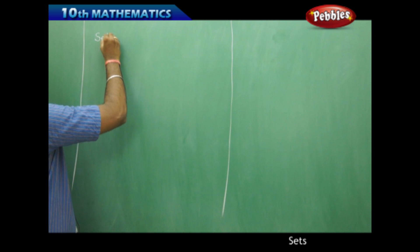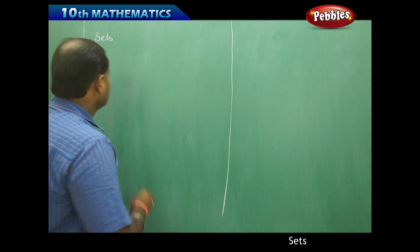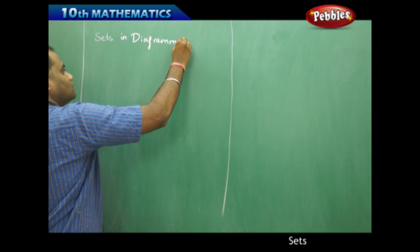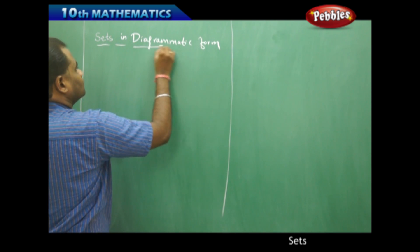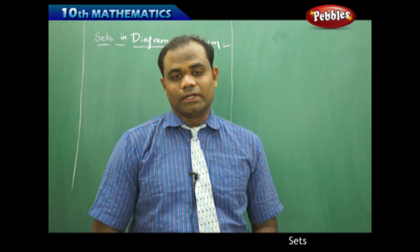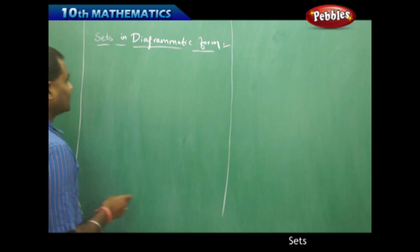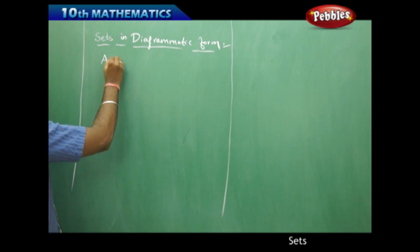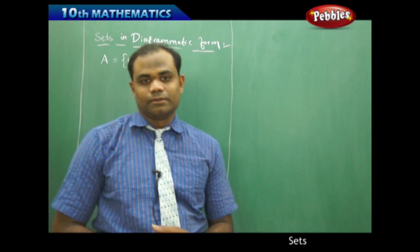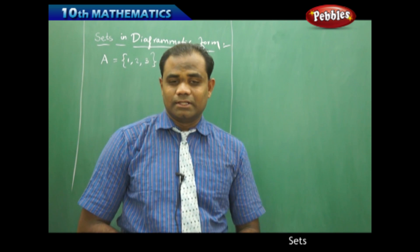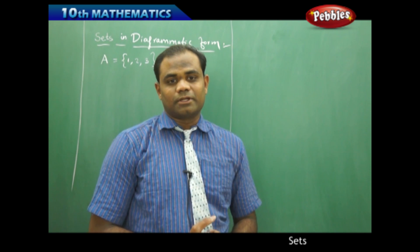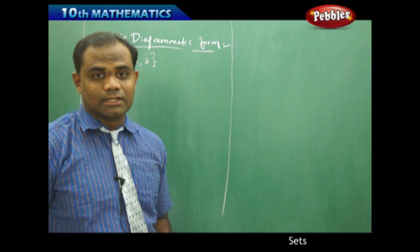There are different rules through which we take sets in diagrammatic form. When I take a set in diagrammatic form, firstly we know that a set is generally denoted with capital letters of the English alphabet. For example, take set A with elements 1, 2, and 3. We clearly know that the number of elements in this set is 3. Now, how do I represent this in the diagrammatic form? What kind of diagram I use is what we are going to discuss in this session.